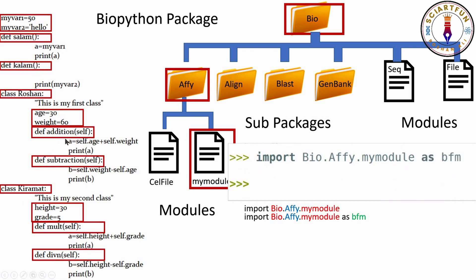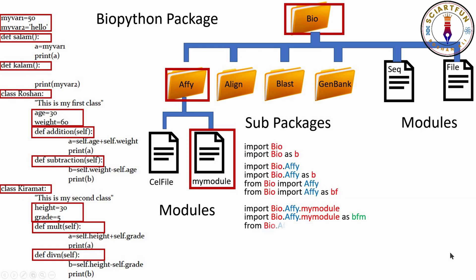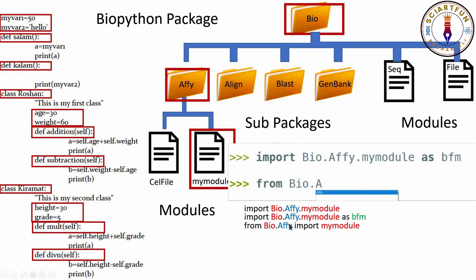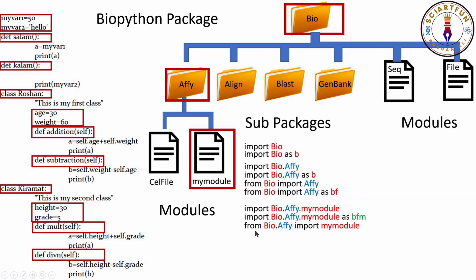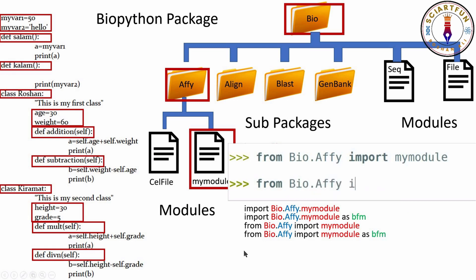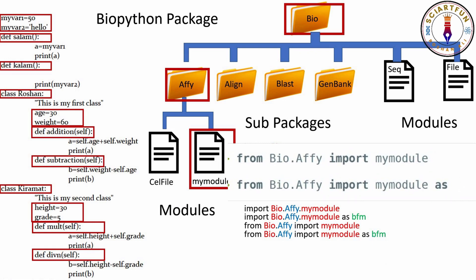These are the variables, functions, classes, methods, and sub-variables of the classes. The third method is the from-import method: 'from Bio.Align import my_module'. This means from this package and subpackage, we want to import my_module. Using this method, you only need to type my_module when accessing its contents. Similarly, 'from Bio.Align import my_module as bfm' renames it so you type bfm instead.